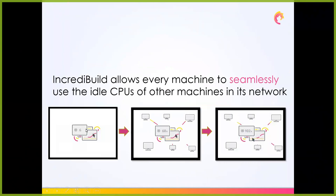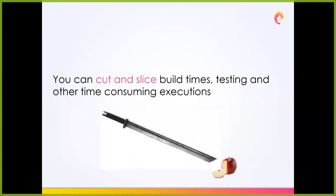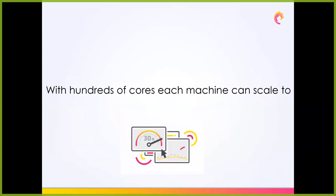You usually start your build with a single machine, but with IncrediBuild you could use a lot more machines and use all the aggregated cores of these machines. The result is that every machine can transform and become a supercomputer. From experience with our customers, organizations have hundreds of cores that are not being used every minute — even machines that people from sales or development are working on, only a small portion of the CPU is being used.